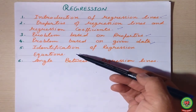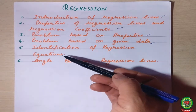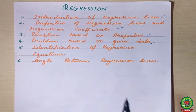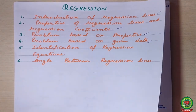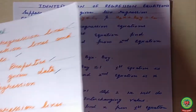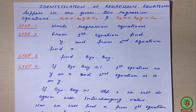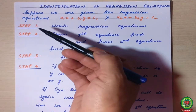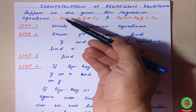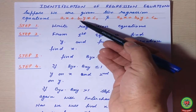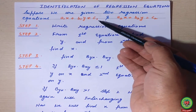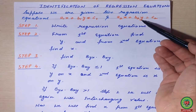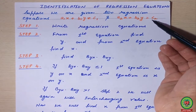Now in continuation with this topic, today we will learn how to identify the regression equation when a simple linear equation is given — how to identify what is the equation of y on x or x on y. Suppose we are having two equations: the first is a1·x + b1·y = c1 and the other is a2·x + b2·y = c2.